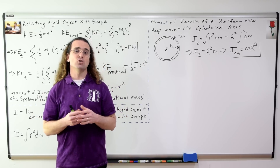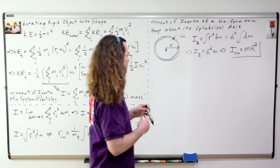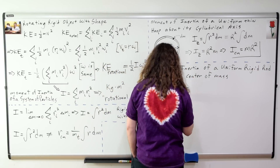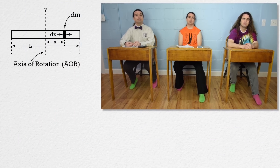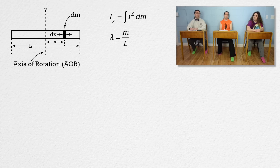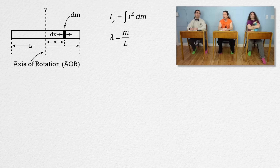Now let's derive the moment of inertia of a uniform thin rod about its center of mass. Bobby, could you please work on this one? That is the moment of inertia about the y-axis, which equals the integral of r squared dm. I think you need to start with lambda, the linear mass density, which is constant for a uniform rod. It equals the total mass of the rod divided by the total length of the rod, and it also equals the mass of dm divided by the length dx.